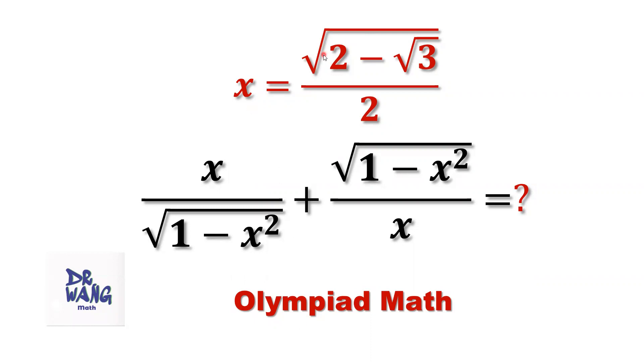If x equals square root of 2 minus square root of 3 divided by 2, what is the value of the sum of two radicals?